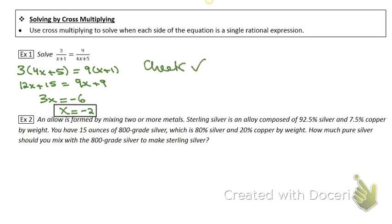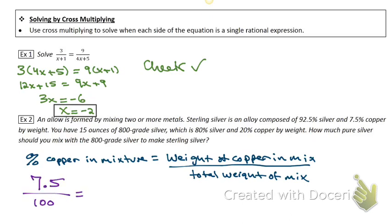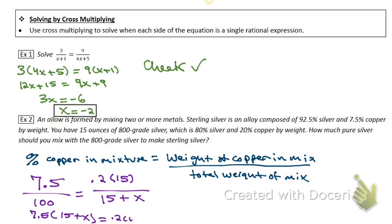How much pure silver should you mix with the 800-grade silver to make sterling silver? The percent of copper in the mixture equals the weight of copper in the mixture divided by the total weight of the mixture. So it's 7.5 over 100 — that's the percent of copper in the mixture — and then 20 percent of copper times the 15 ounces is over x plus 15.